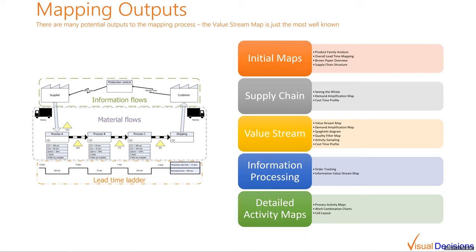Activity sampling involves an observer randomly observing the process periodically throughout a day or week, recording how often the process is in a value-add versus non-value-add state. A number commonly cited is about 200 random observations. The cost-time profile can also be created at the plant level, showing how cost stacks up against time after an order is released to the floor — very useful for identifying where costs are building up unnecessarily.